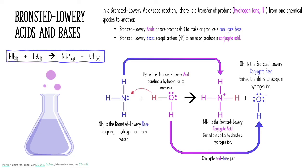Following the top arrow over to the ammonium polyatomic ion — that's what resulted when ammonia took in that hydrogen. The ammonium polyatomic ion is our Bronsted-Lowry conjugate acid because it has gained the ability to donate a hydrogen ion. It has an extra hydrogen ion and could donate that back to the hydroxide ion to produce water and ammonia again. This also demonstrates that Bronsted-Lowry acid-base reactions are reversible — they're kind of passing that hydrogen back and forth.